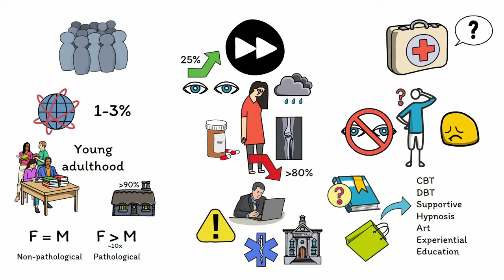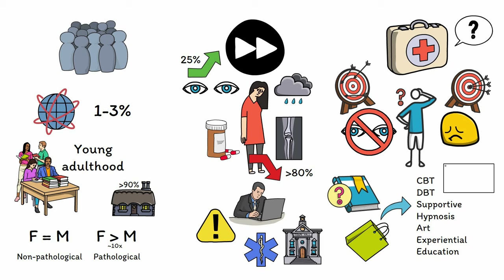Therapy appears to be only somewhat effective at addressing dissociation itself. Instead, the most robust effects of therapy tend to involve reducing comorbid symptoms related to depression, anxiety, suicidality, trauma, and borderline personality disorder. Studies have suggested that effective therapy for dissociative disorders typically requires long-term treatment on the order of years rather than weeks or months. However, since we know that dissociative phenomena tend to naturally lessen over time even without treatment, it's unclear whether the beneficial effects observed with therapy are a direct result of therapy or simply the natural course of the disorder. There is a clear need for more rigorously designed studies.